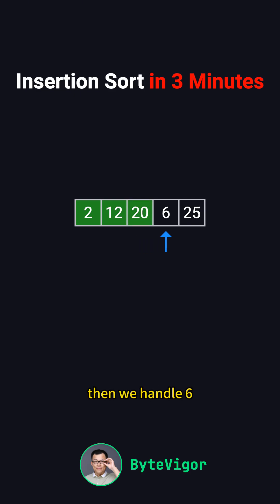Then, we handle 6. Using the same process, we move 20 and 12 one position to the right, since they are both larger than 6. Next, we insert 6 between 2 and 12. The array becomes 2, 6, 12, 20, 25.